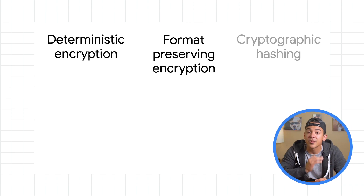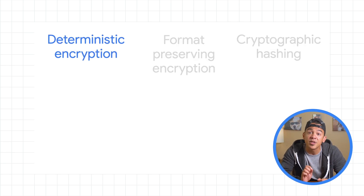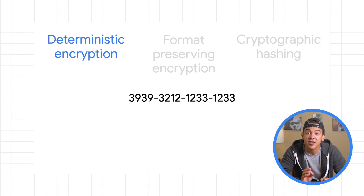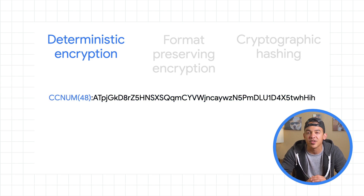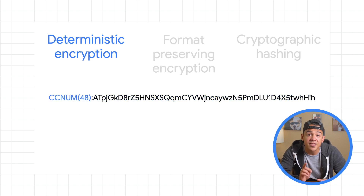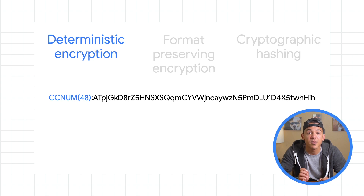Cloud DLP supports three types of cryptographic methods. First is deterministic encryption, where the detected data is replaced with an encrypted value and prepended with an optional surrogate annotation. This method supports most input types and is authenticated, which makes it the most recommended tokenization solution.